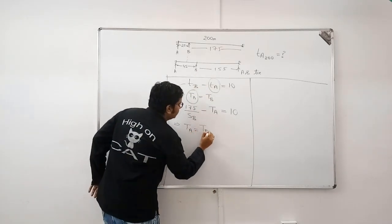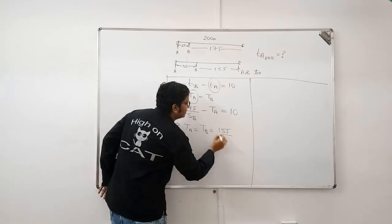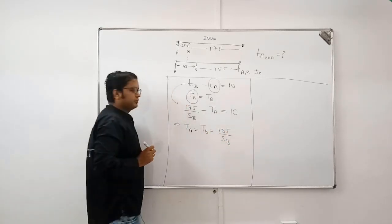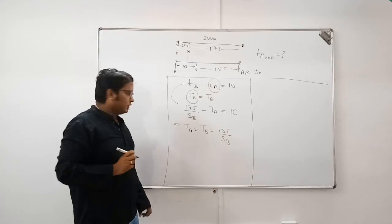So, TB again is distance by speed. Clear?